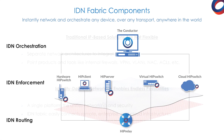The IDN fabric itself is made up of three components. The conductor, which provides centralized orchestration and control of the fabric. HIP services that are deployed together with any resource you are protecting and function as IDN enforcement points. And the HIP relay, which is a HIP service feature and provides identity-based routing.